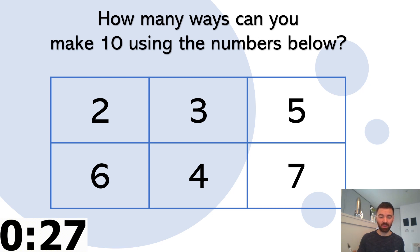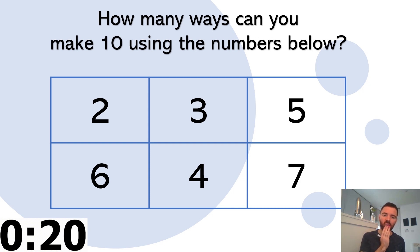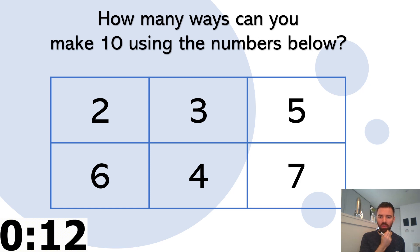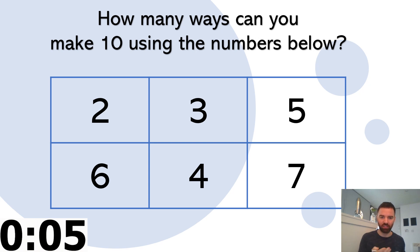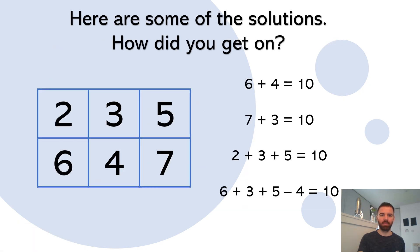Almost there with the time. Is there another way? Six add two add four — and twelve. Six add four add two add three is fifteen, six add four is ten, two add three is five, fifteen take away five — that's ten as well. Done it!